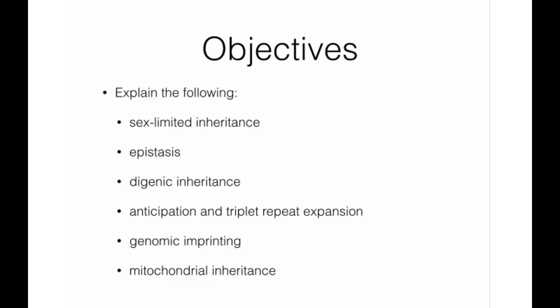In this lecture, we'll explain the following ideas: sex-limited inheritance, epistasis, digenic inheritance, anticipation and the role of triplet repeat expansion mutations, genomic imprinting, and mitochondrial inheritance.